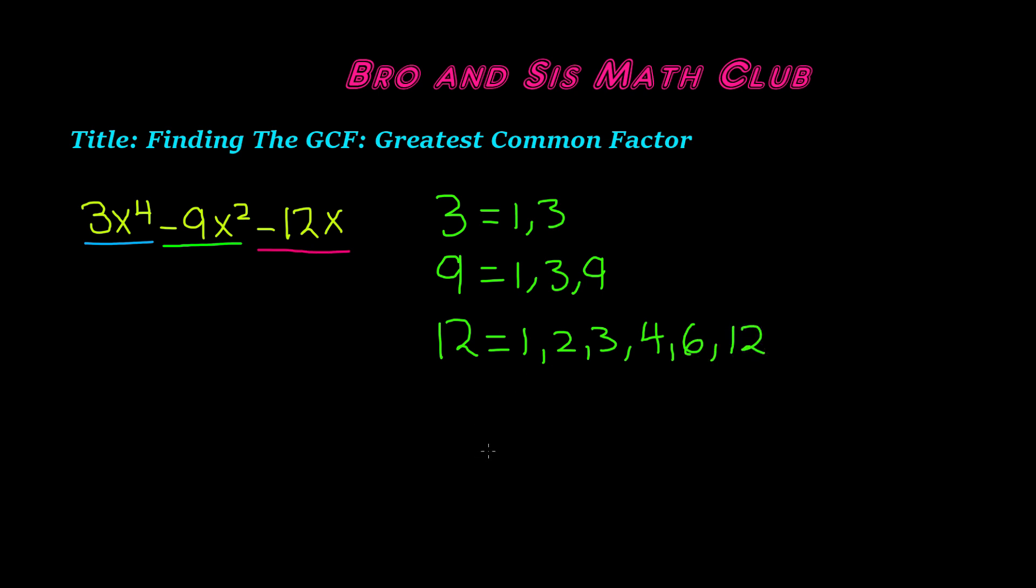Now we have to find the greatest common factor of these constants, and obviously it is going to be 3. So the GCF of the constants is 3.